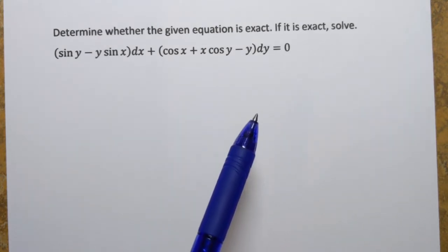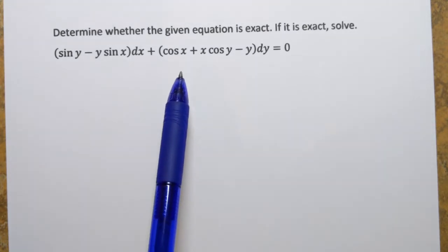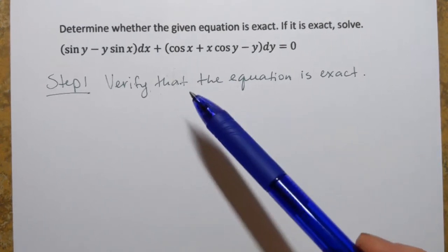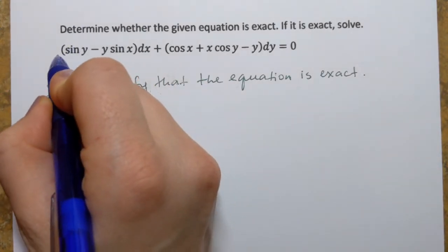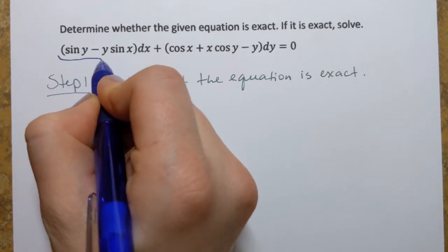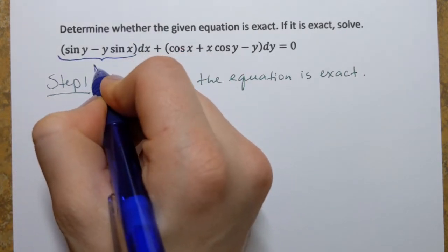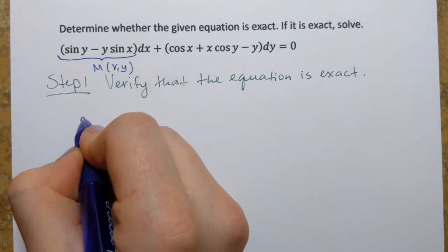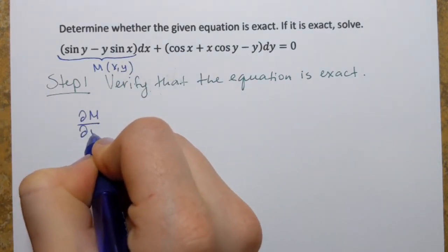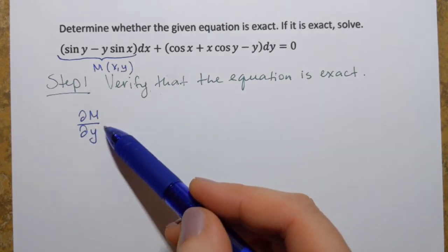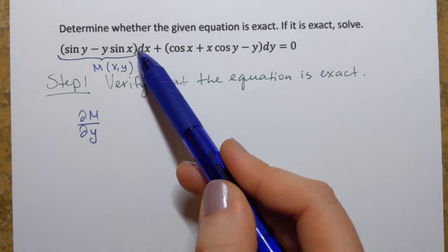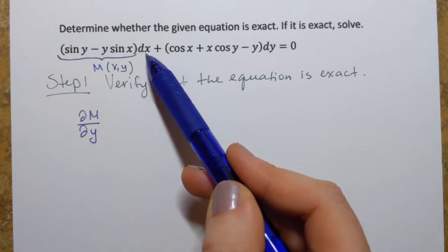We start by determining or confirming that we're looking at an exact differential equation — that's step one. To verify that this equation is exact, we take the function that stands in front of dx, which we denote M of xy, and find its partial derivative with respect to y. For testing purposes, we always use the opposite variable compared to the one in the differential.